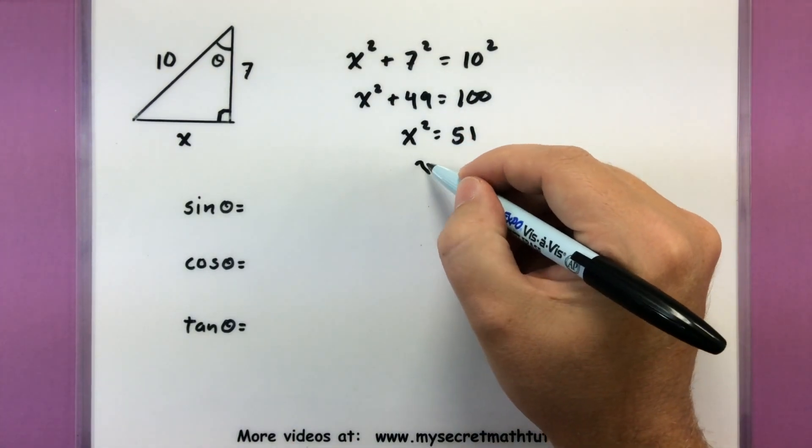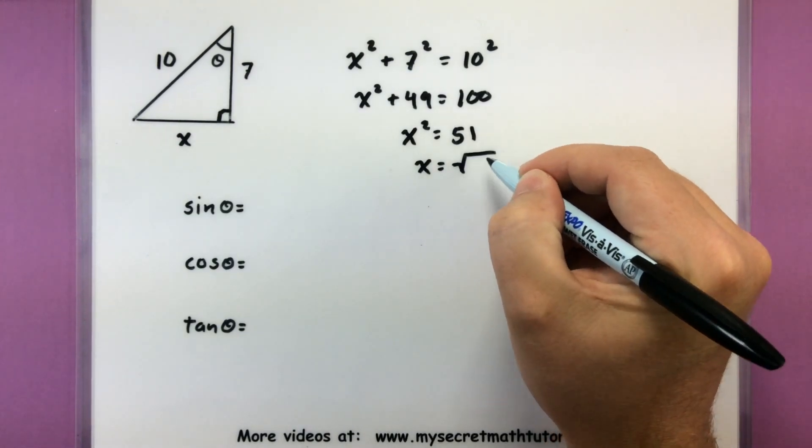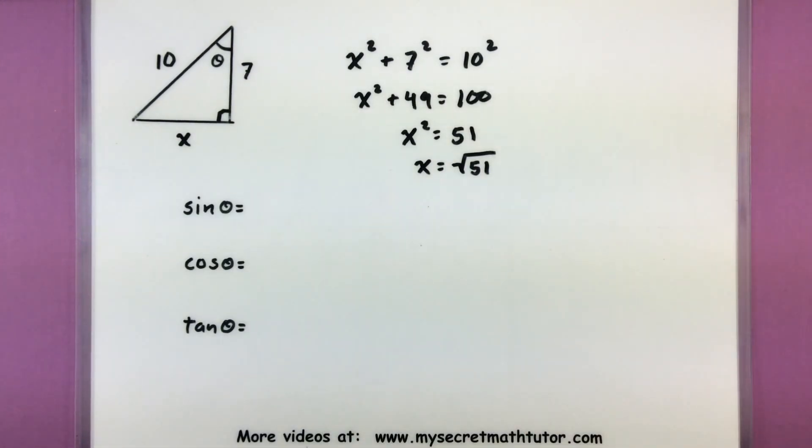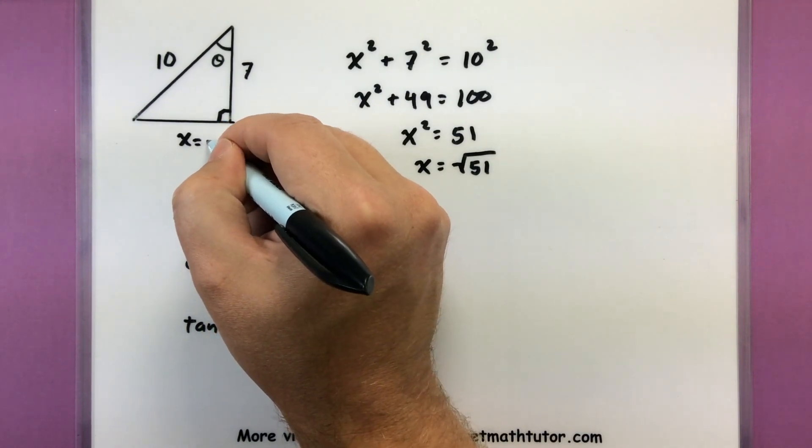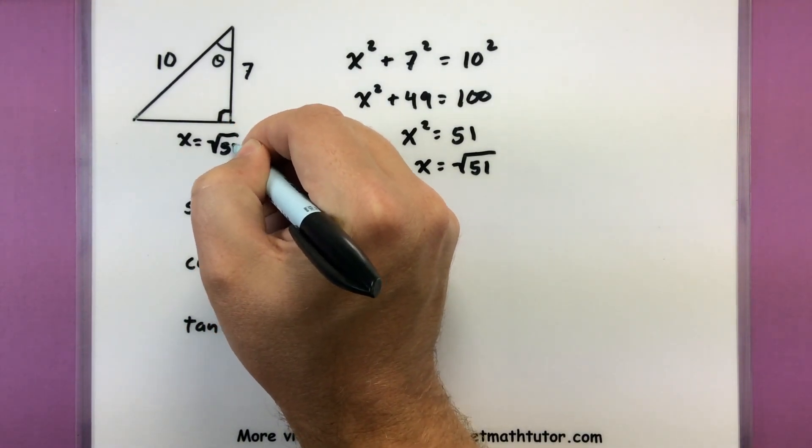And lastly, let's square root both sides, square root of fifty-one. Now unfortunately that doesn't simplify and sometimes it doesn't feel good to get an answer like that, but it's a perfectly good answer, so that is our other side, square root of fifty-one.